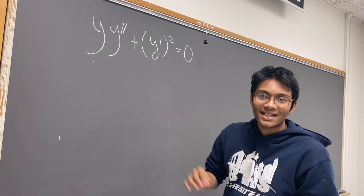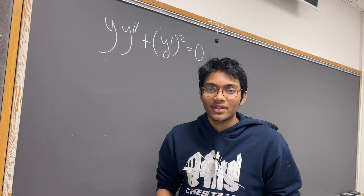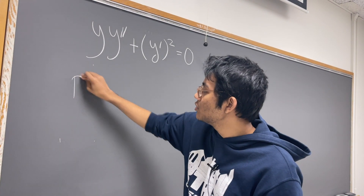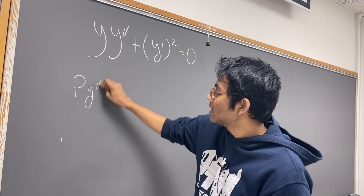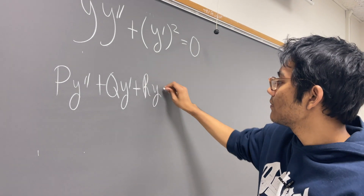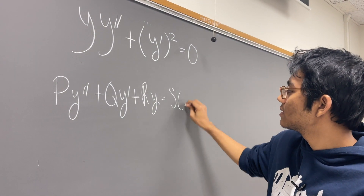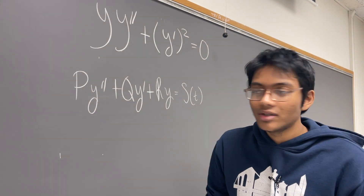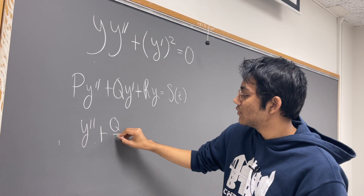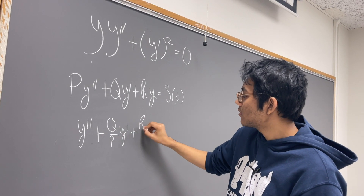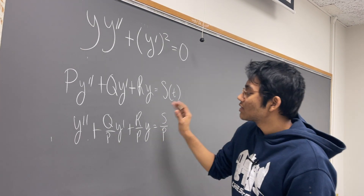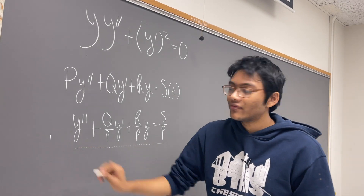We know three methods to solve a second-order differential equation. A second-order differential equation usually has the following form: P y-double-prime plus Q y-prime plus R y equals S. You can usually divide out the first coefficient so that you're left with y-double-prime plus (Q/P) y-prime plus (R/P) y equals S/P. That's typically how second-order differential equations look.